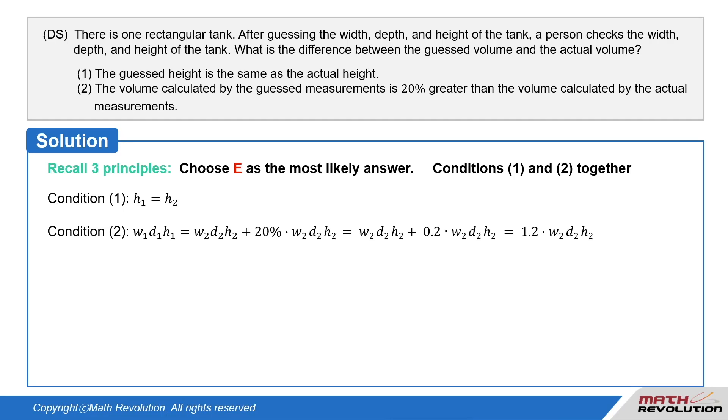W1·D1·H1 equals W2·D2·H2 plus 20% times W2·D2·H2, which simplifies to W1·D1·H1 equals W2·D2·H2 plus 0.2 times W2·D2·H2.